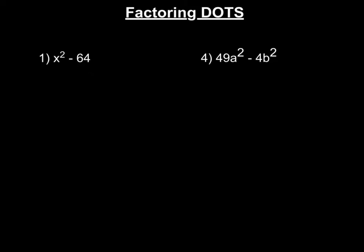DOTS are really easy to factor. As long as you have a difference of two squares, all you do is set up two sets of parentheses. You take the square root of whatever's in the first spot and put that in the first spot within each parenthesis. The square root of x squared is x. We're going to have one addition sign and one subtraction sign — it doesn't matter where you put them, as long as you have one of each. Then take the square root of 64 and put it in the second spot in each parenthesis.